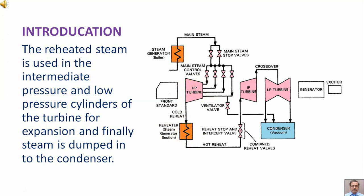The reheated steam is used in the intermediate pressure and low pressure cylinders of the turbine for expansion and finally steam is dumped into the condenser.